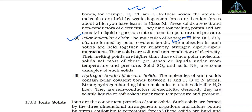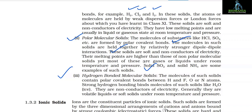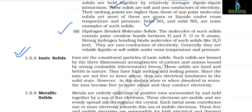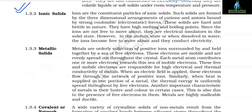(2) Polar molecular solids — molecules of substances like HCl and SO₂ are formed by polar covalent bonds and are held by relatively stronger dipole-dipole interactions. These are soft, non-conductors of electricity, and have higher melting points than non-polar molecular solids, though most are gases or liquids at room temperature. Solid SO₂ and solid NH₃ are examples. (3) Hydrogen-bonded molecular solids — contain polar covalent bonds between hydrogen and F, O, or N atoms. Strong hydrogen bonding binds molecules such as H₂O. They are non-conductors of electricity and generally volatile liquids or soft solids at room temperature.